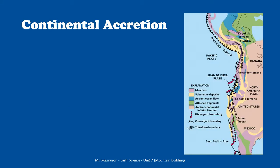The last thing I want to talk about is a really big process — and by big, I mean on a really large scale — and that is called continental accretion. This is a process by which we can actually make continents bigger. We've talked a lot about destroying rock at convergent boundaries, but here we're going to look at an example of actually adding to the continents at an oceanic-continental convergence.